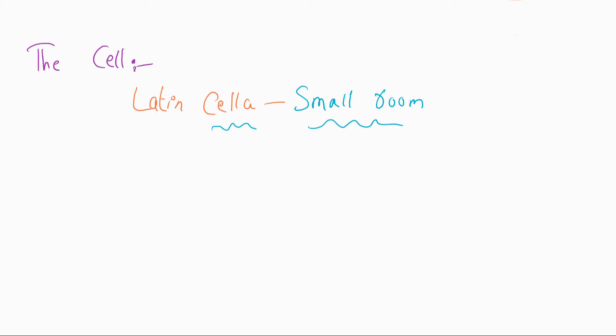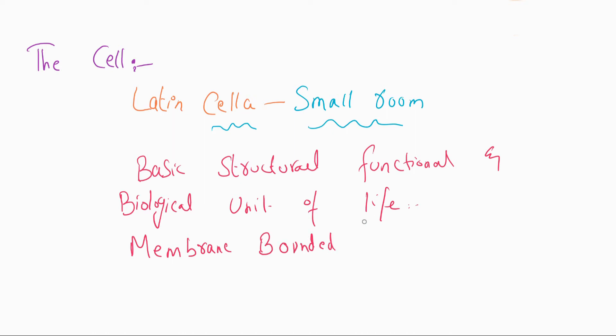What is the definition of cell? Cell is the basic structural, functional, and biological unit of life. Cell is a membrane-bounded unit composed of cytoplasm.